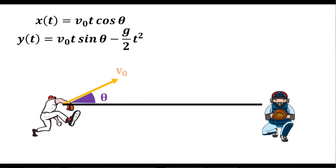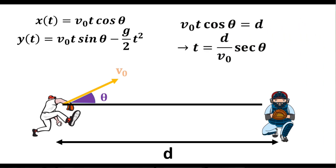This means that when the ball lands, its horizontal displacement is exactly d. So we're going to set v0 cosine theta times t to be d, and the y displacement to be 0.